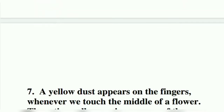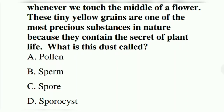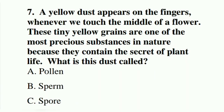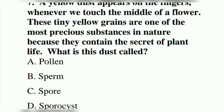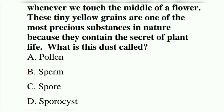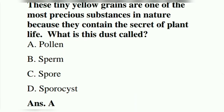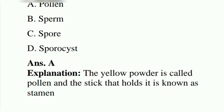Seventh question: a yellow dust appears on the finger whenever we touch the middle of a flower. These tiny yellow grains are one of the most precious substances in nature because they contain the secret of plant life. What is this dust called? Option A: pollen. Option B: sperm. Option C: spore. Option D: sporocysts. The answer is A, pollen. The yellow powder is called pollen.